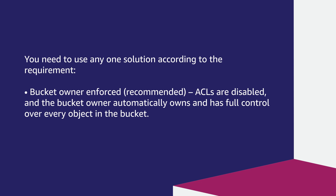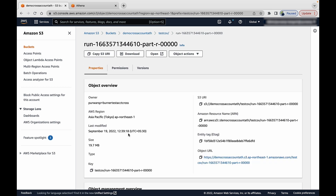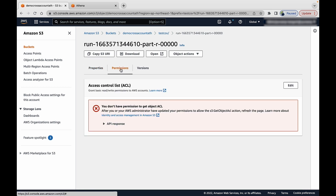The recommended solution is Bucket Owner Enforced, where ACLs are disabled and the bucket owner automatically owns and has full control over every object. The object owner can grant full control by running the put-object-acl command with the bucket-owner-full-control parameter. To change object ownership to the account that owns the S3 bucket, run the AWS CLI command: aws s3 cp from the bucket account to copy the object over itself.